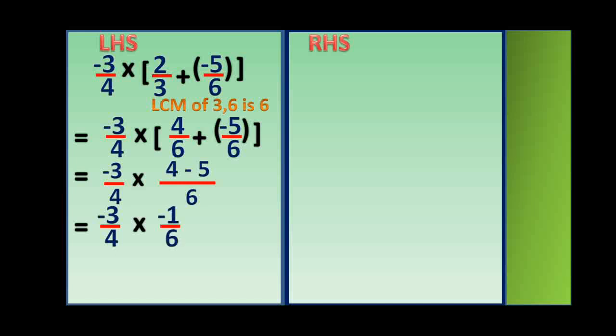Now you can multiply the numerators and multiply the denominators. Minus 3 into minus 1 is plus 3 and 4 into 6 is 24. Here, 3 and 24 have a common factor of 3, so we can reduce it to the lowest term. Dividing both by 3 gives us 1 by 8.